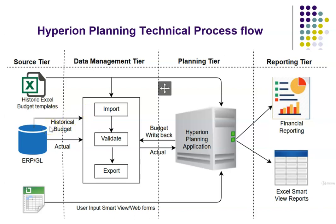This diagram also shows that we can bring historical budget data. Why do we need to bring historical budget data if we are already bringing it from Excel templates? In some organizations, historic data may already be loaded into ERP. If historic budget data is available in ERP, it is easy and convenient to bring it directly into the Hyperion planning application, saving a lot of time. Most of the time, the ERP chart of accounts and the Hyperion planning application chart of accounts could be the same, but that need not be true in all cases.